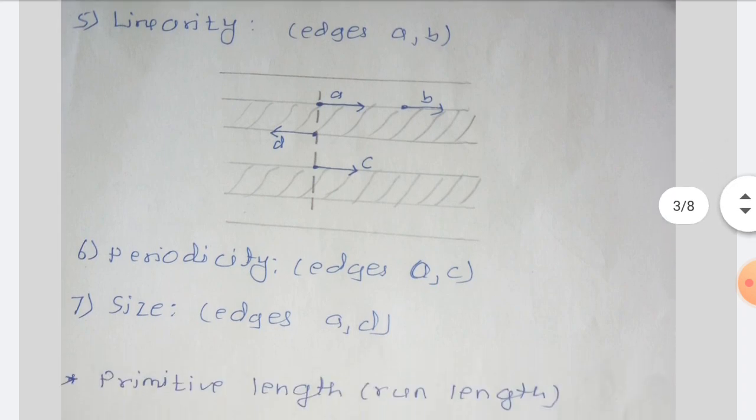The last feature is size. Texture size may be based on co-occurrences of edge pairs with opposite edge direction at a constant distance in a direction perpendicular to the edge direction, as shown in the figure with edges A and D. Note that the first three measures are derived from first order statistics, and the last three are derived from second order statistics.